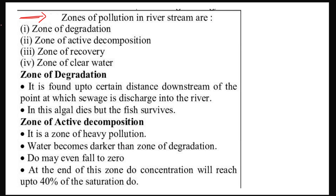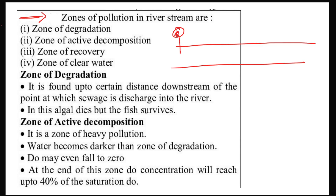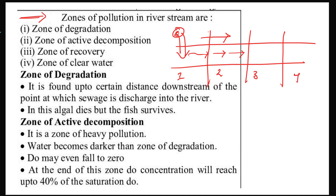Zones of pollution in a river stream: as the river flows, there are different zones of recovery. These zones are: zone of degradation, zone of active decomposition, zone of recovery, and zone of clear water.